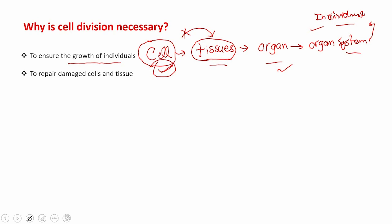Secondly, cell division is necessary to repair damaged cells and tissues. Whenever there is a cut or wound in our body, it means cells at that wounded place have been damaged. So new cells immediately begin to form to cover this loss. If no cell division would take place at that wounded area, our wound will never ever be healed. So to repair damaged cells and tissues, cell division is necessary.